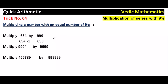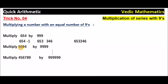The next step is to subtract 653 from 999. So 9 minus 3 is 6, 9 minus 5 is 4, 9 minus 6 is 3. Just write the right-hand side as 653. So 654 into 999 is equal to 653346. This is the answer.